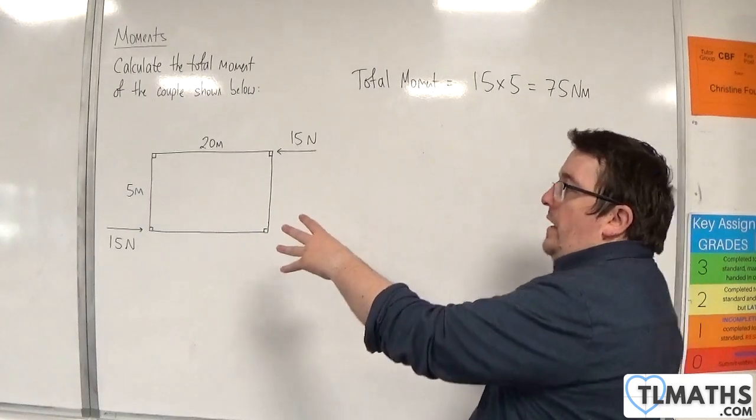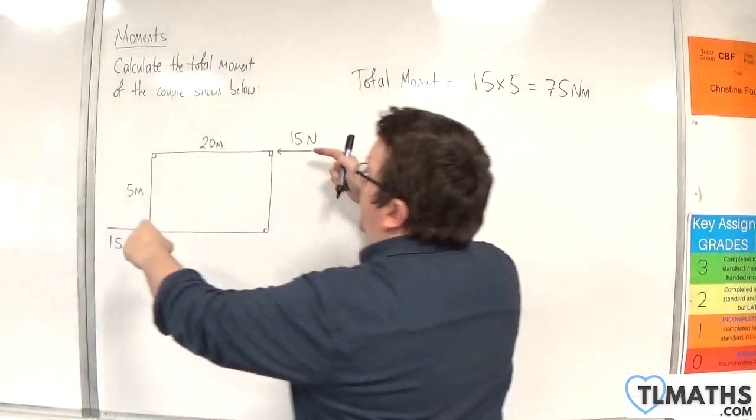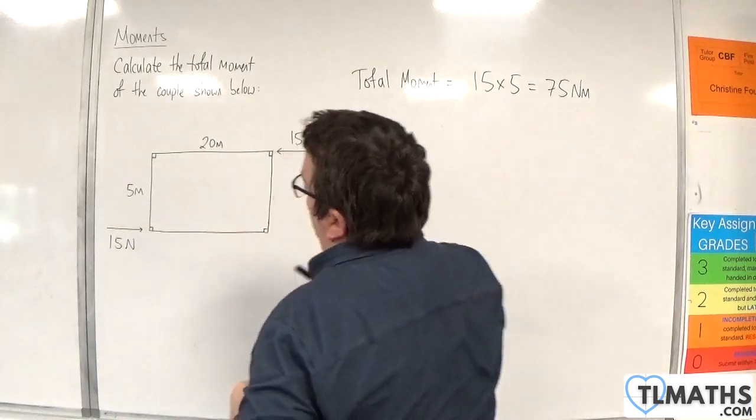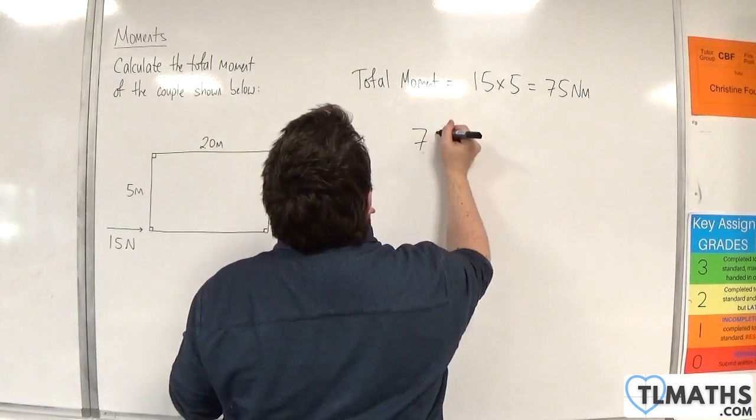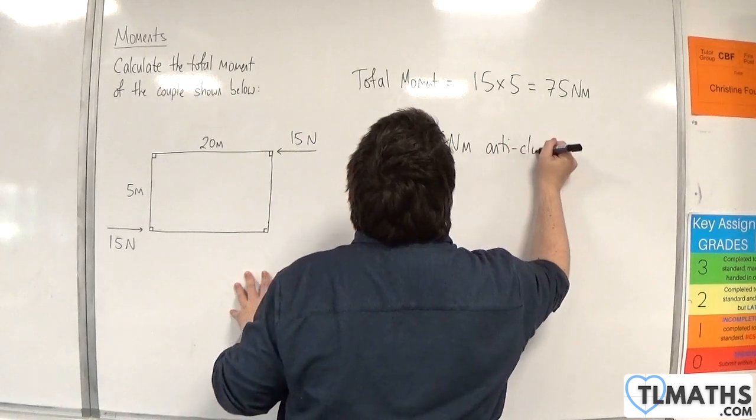And we could easily see by where the forces are being applied that that will cause a motion that will go in that direction. So an anti-clockwise motion. So that is 75 newton meters anti-clockwise.